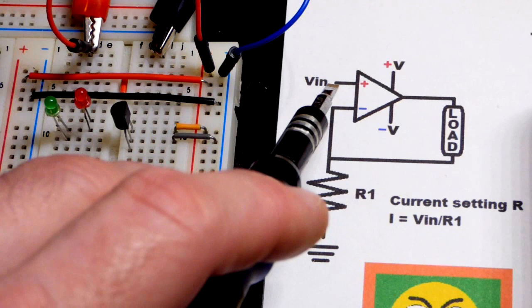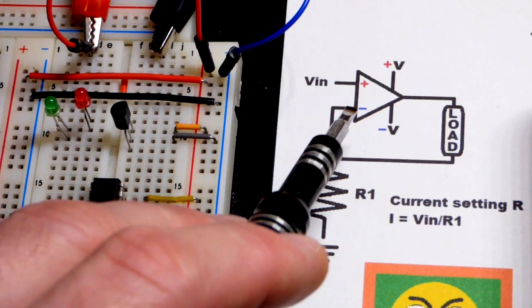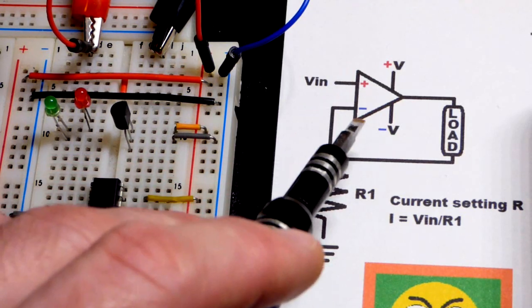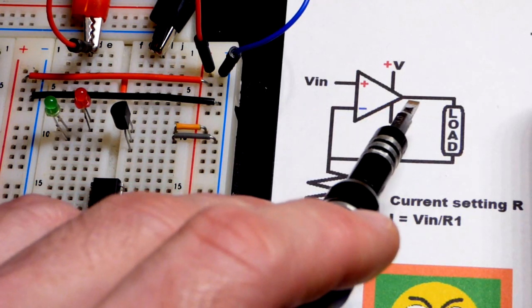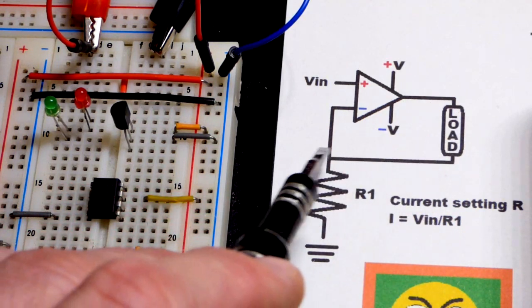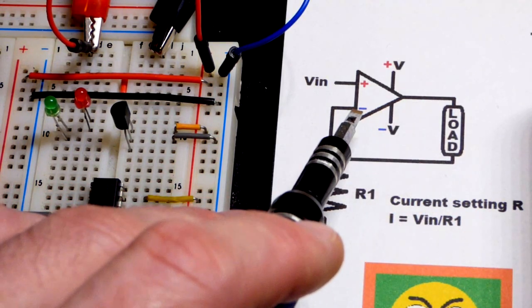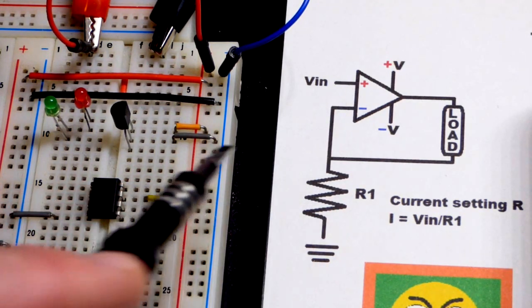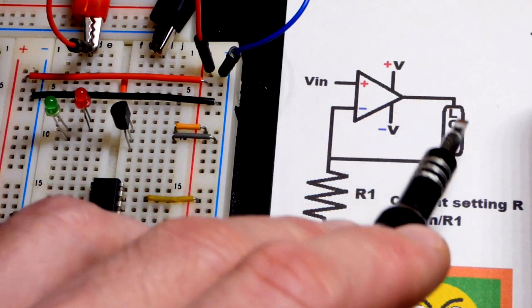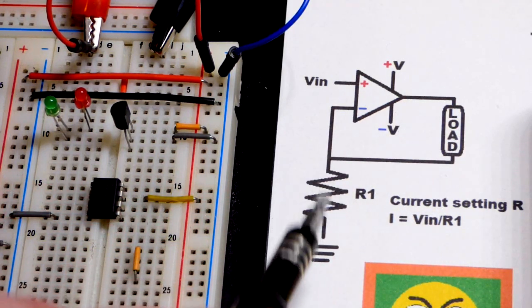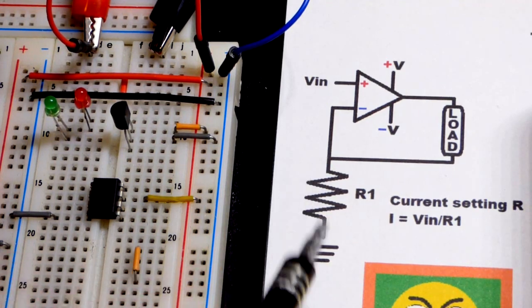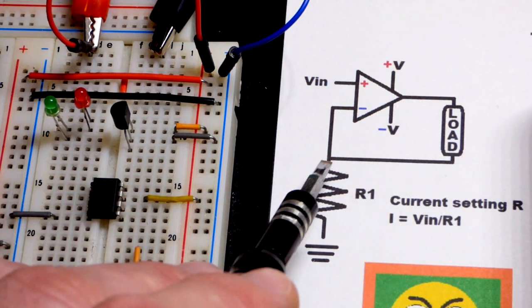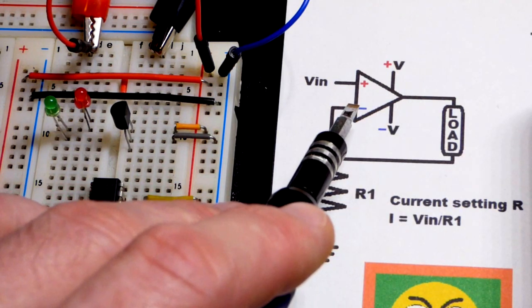As seen with pretty much all op amp videos, when you have negative feedback the op amp, because it can change the voltage at the output, tries to hold the voltage the same at the inverting input as it is at the non-inverting input. It raises the voltage as needed to get that voltage equal.